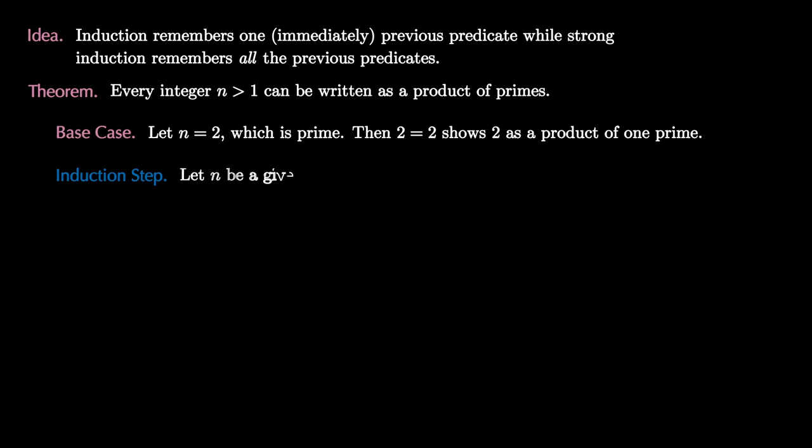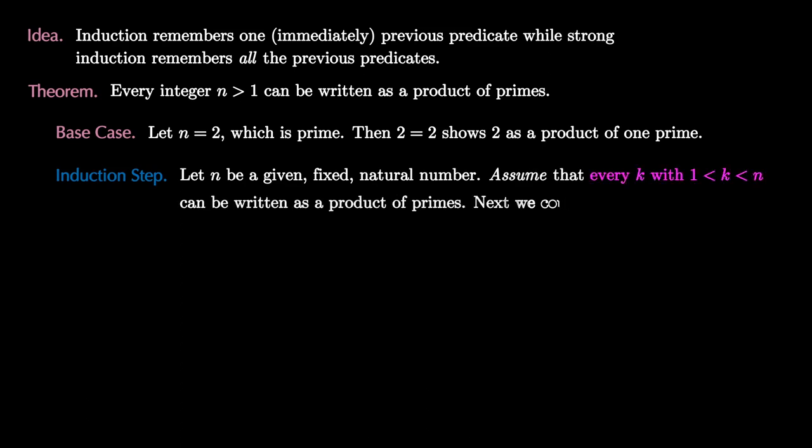For our induction step, we first imagine that n is a given fixed natural number greater than or equal to 2. Next, we assume that every k with 1 < k < n can be written as the product of primes. Now we consider two cases for n. First of all, if n is prime, then n equals n shows n written as a product of one prime.